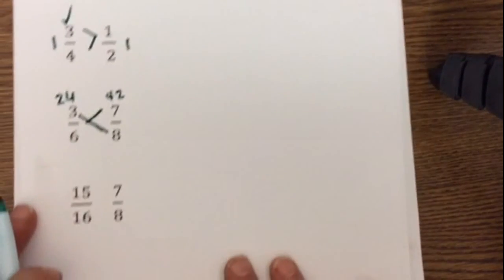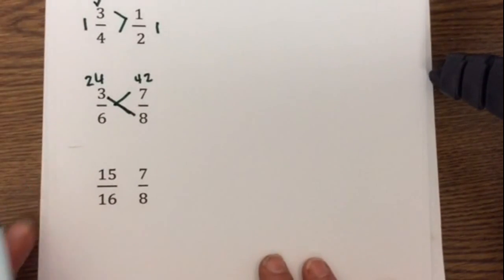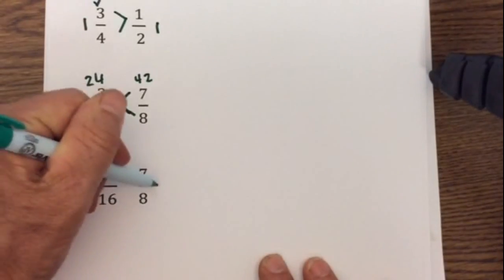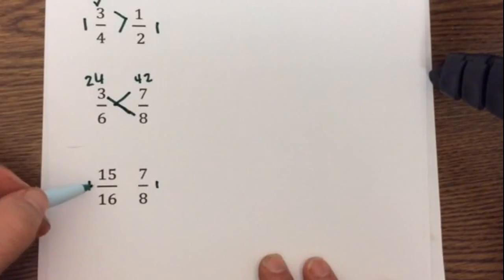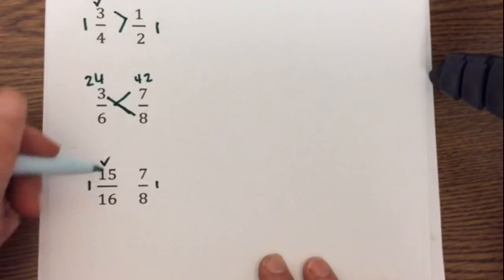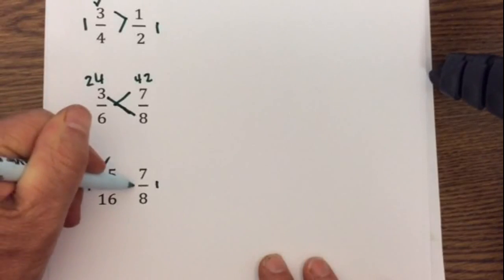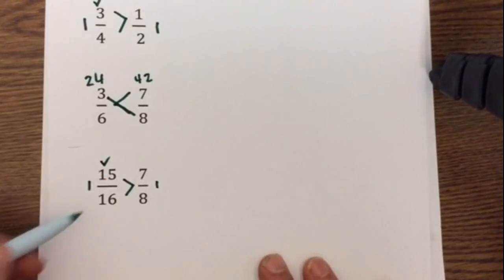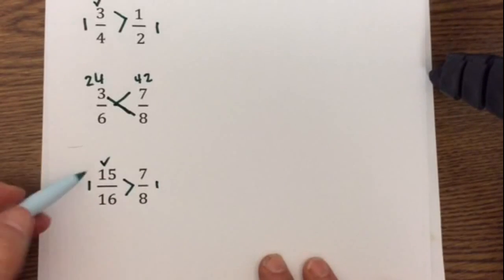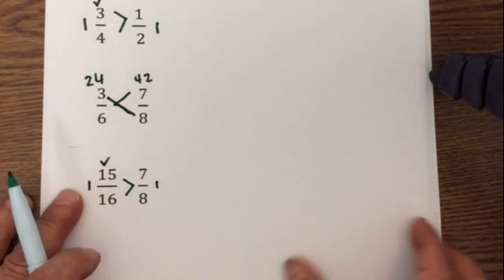In this next one you can see how this shortcut comes in handy. 16 minus 15 is 1 and 8 minus 7 is 1, so I can just use the largest numerator as the largest fraction, and so 15 sixteenths is greater than 7 eighths. Now if I didn't know that shortcut I would have to multiply 15 times 8 and 16 times 7, and it's a lot easier doing it this method.